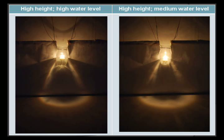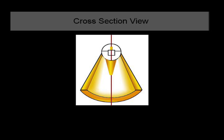Here we see the vertical cross section view around the optical axis. Two cones are cast downward and create the caustic pattern below.